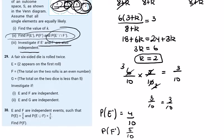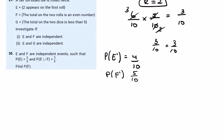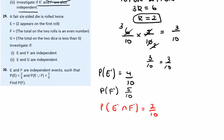The probability of E complement intersection F complement — where does everything outside E intersect with everything outside F? Highlighting everything outside E in black and everything outside F in red, the only region with both black and red is at the 2. So the probability of E complement intersection F complement is 2 over 10.